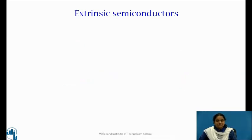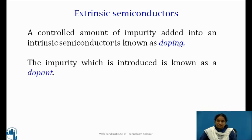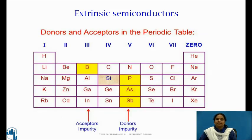So, a cautious introduction of impurity atoms in a perfect semiconductor crystal produces useful modifications of its electrical conductivity. A controlled amount of impurity added into an intrinsic semiconductor is known as doping. The impurity which is introduced is known as a dopant, and a semiconductor that is doped with impurity atoms is called an extrinsic semiconductor. The pentavalent elements from group 5 or trivalent elements from group 3 are used as dopants. The atoms belonging to these two groups are nearly of the same size as silicon or germanium atoms and easily substitute themselves in place of some of the host atoms in the semiconductor crystal.